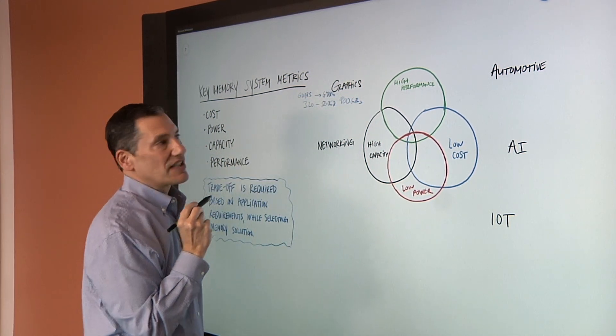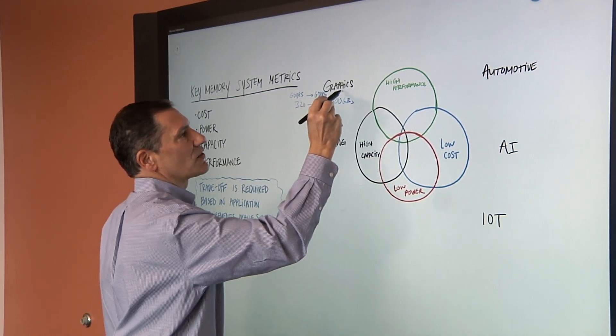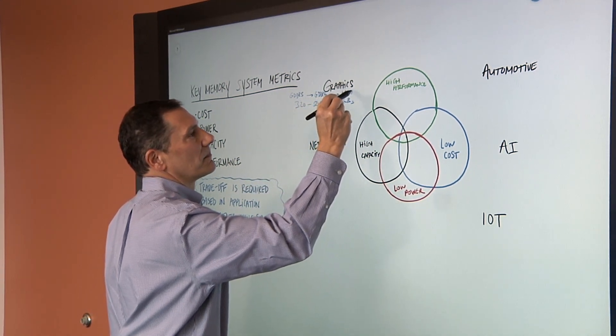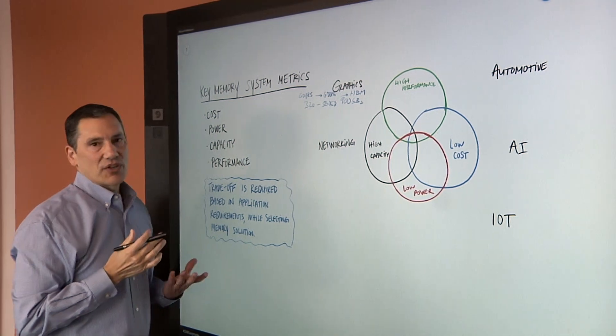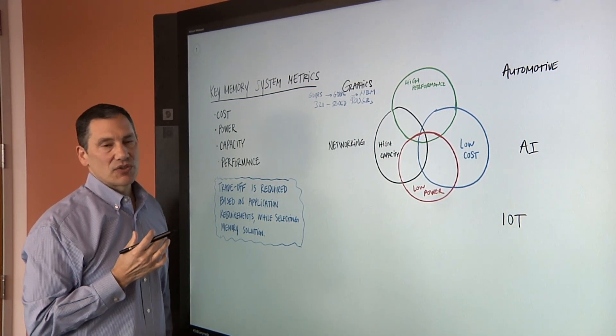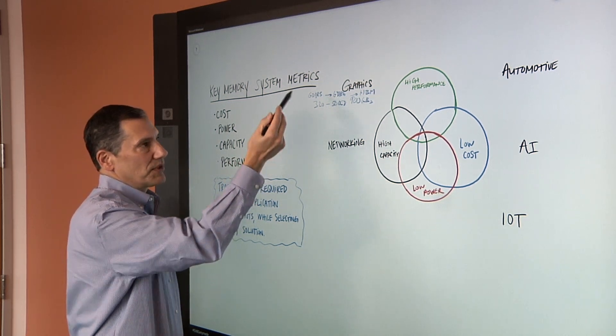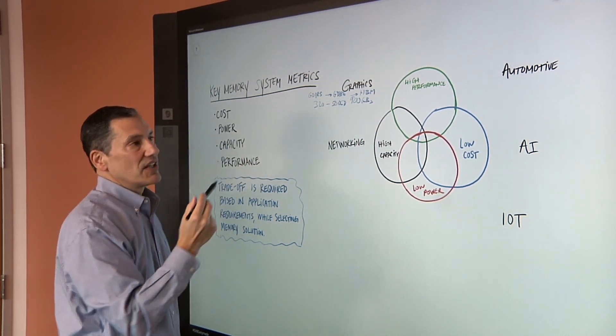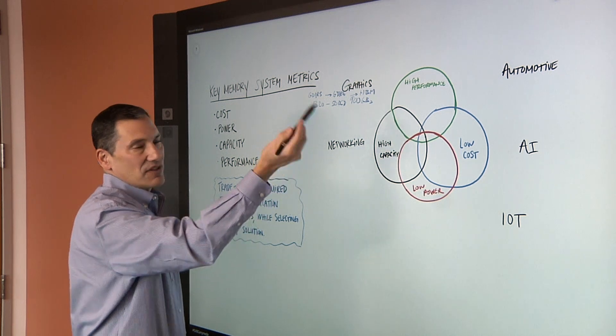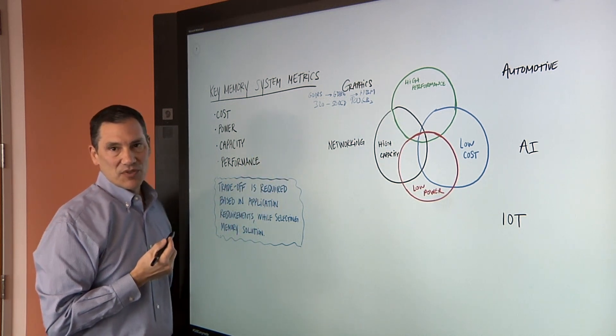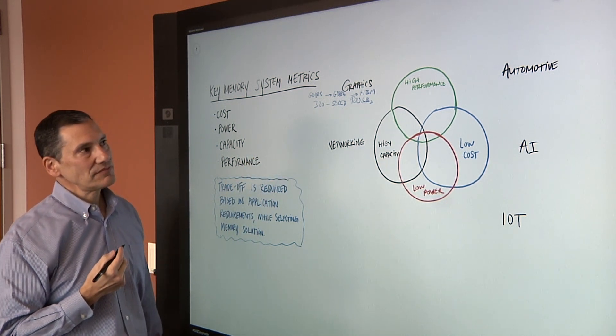Even in these highest end applications, now you have HBM. So you can see even within the graphic segments, you've got a range of applications from lower end consumer applications still being well covered by GDDR5, GDDR6, and then for the very high end, high bandwidth memories being used.